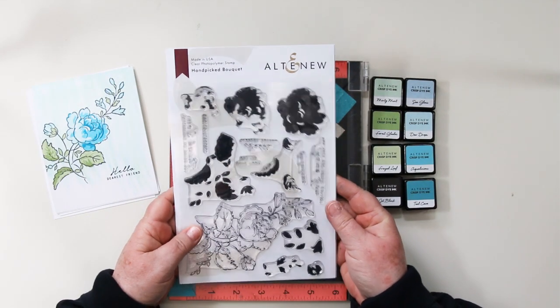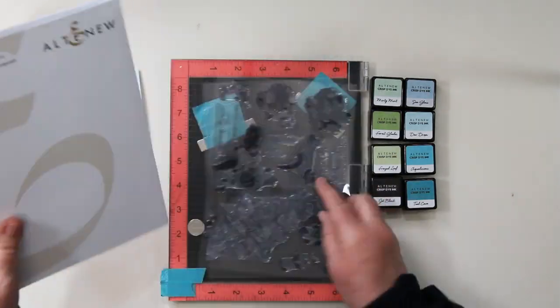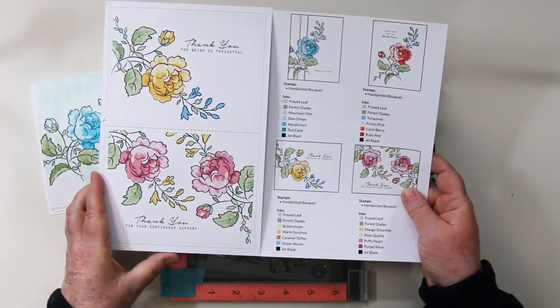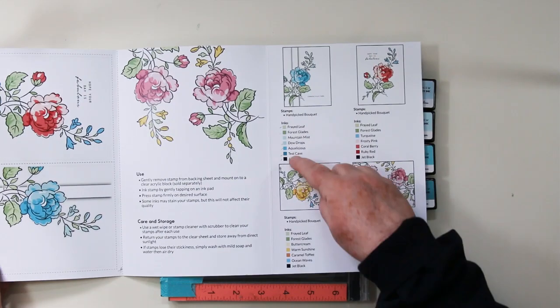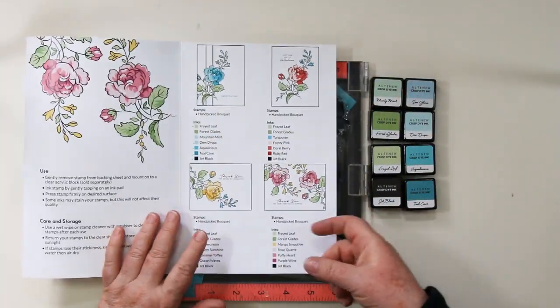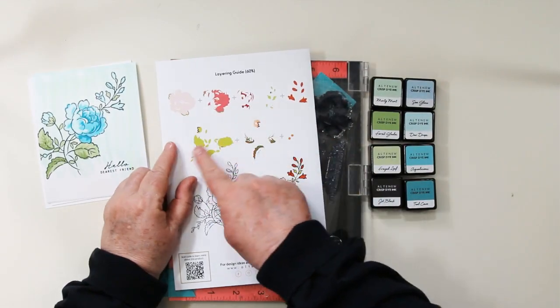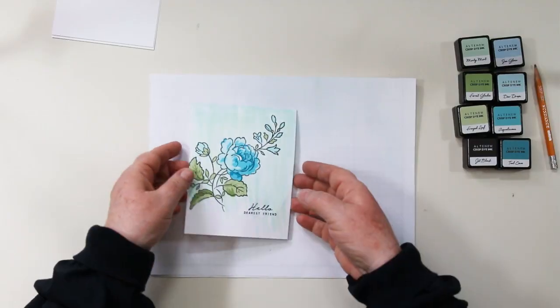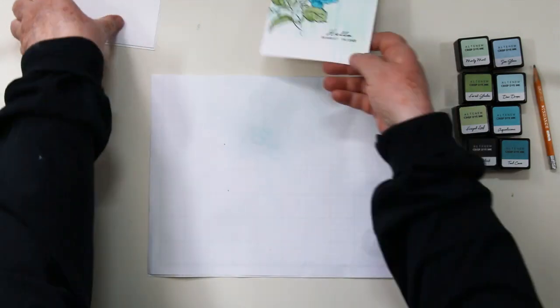Hi stamping friends, welcome back. It's Sandy here and I am working on All About Layers lesson number two in the Altenew educator program. I'm going to be working with the hand-picked bouquet stamp set today, and it comes with this lovely booklet that has all kinds of goodies to help us out.